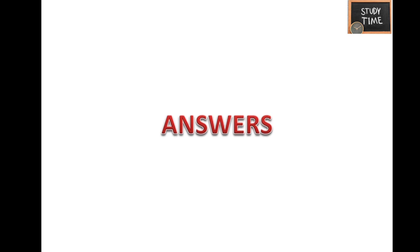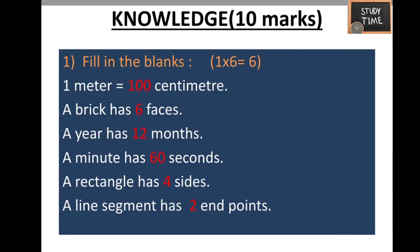Hope you solved all the questions. Let's discuss the solutions now. Here: one meter equals 100 centimeters, a brick has six faces, a year has 12 months, a minute has 60 seconds, a rectangle has four sides, a line segment has two end points.